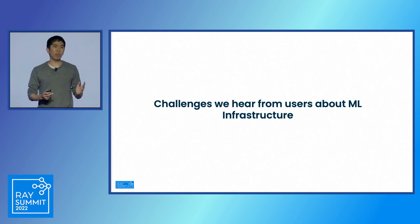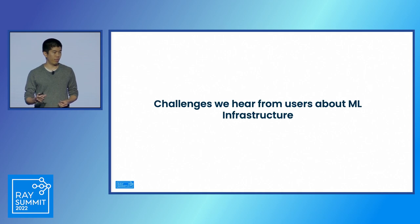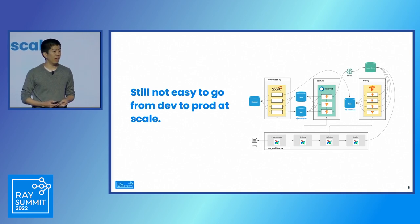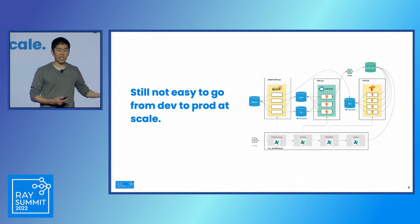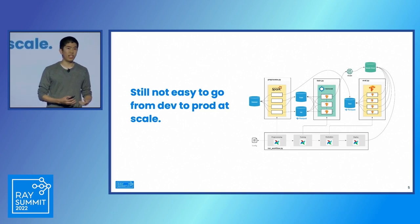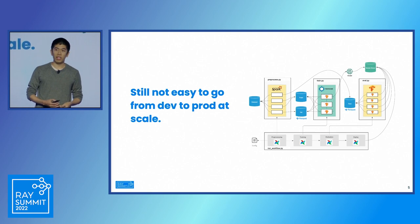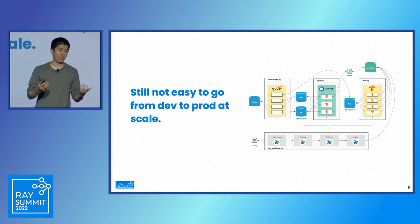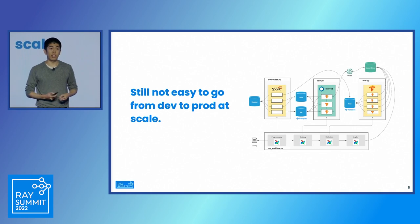Let me tell you about some of the challenges we've heard from our users about their ML infrastructure. A common theme is that it's still not easy to take ML from development to production at scale. You can see an example of an everyday ML pipeline on the right — you do some preprocessing, some training, and then inference on your model. Even with this quite basic pattern, we already have two or three distributed systems, which adds a lot of operational and development overhead to stitch these together.